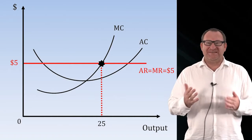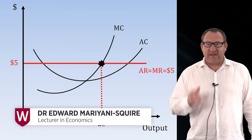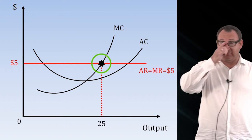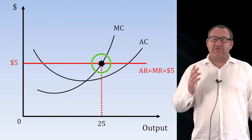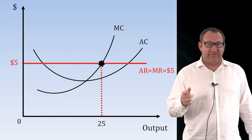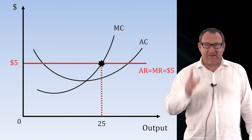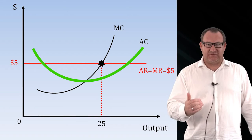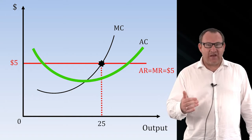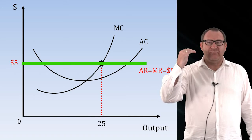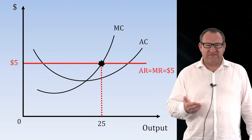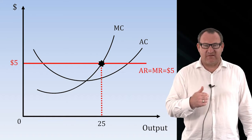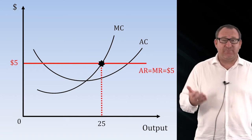We figured out that the firm would be producing its optimal amount at 25 kilos of tomatoes, because this is where the marginal revenue equals the marginal cost. Now whether the firm is making profit or not will depend on whether at that level of output the average cost of production is lower than the average revenue. If there's more money coming in per kilo than is being spent per kilo on producing the tomatoes, then the firm must be making profit per kilo.